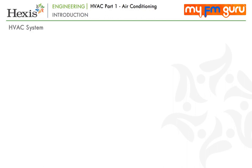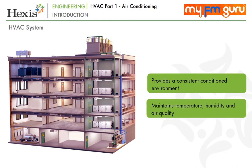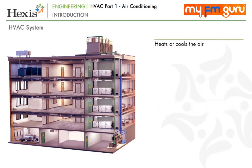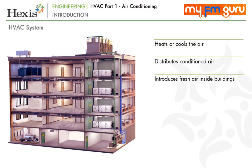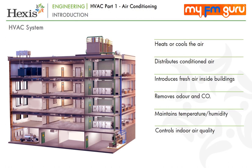Let us begin with the introduction to HVAC systems. One of the major systems in a modern office building is HVAC — that is, heating, ventilation and air conditioning. HVAC systems are used in a facility to provide a consistent conditioned environment by maintaining temperature, humidity and air quality for the comfort of occupants, as well as for optimal performance of equipment. The combined system will heat or cool the air as required, distribute the conditioned air, introduce fresh air inside the building, and remove odour and CO2. Thus, the HVAC system plays a major role in controlling the indoor air quality, which can affect the productivity as well as the health of the building occupants.